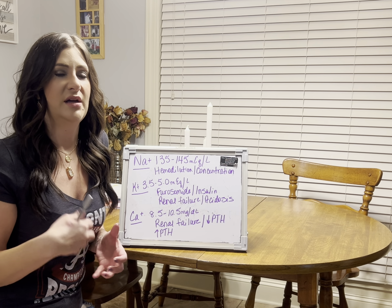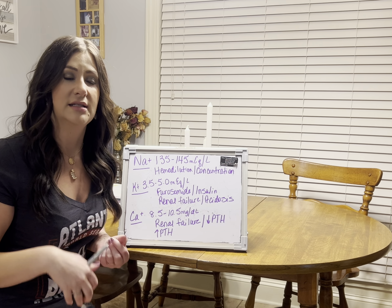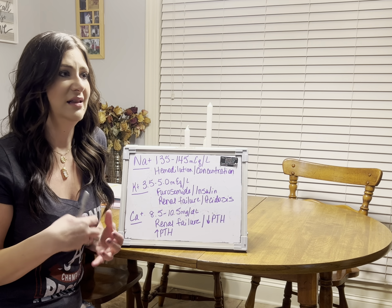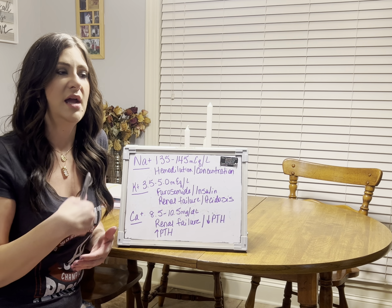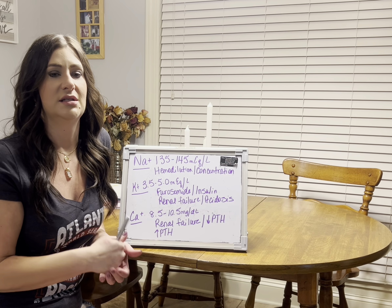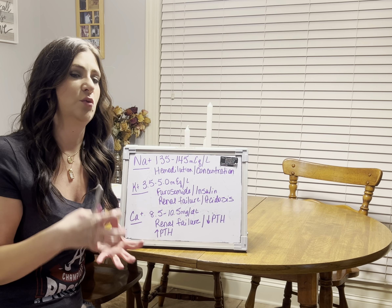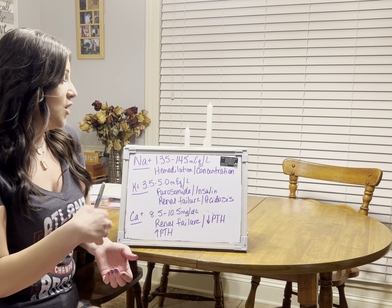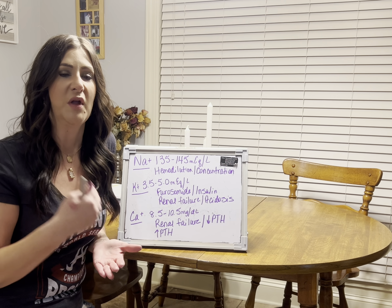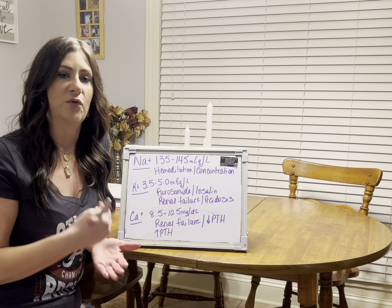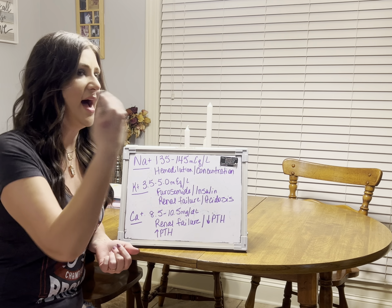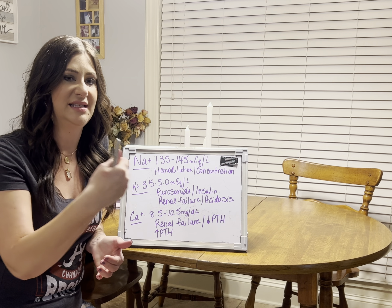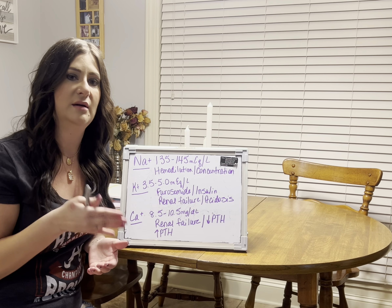To recap: with sodium, think central nervous system — headaches, muscle cramps, lethargy, mental status changes, and in severe cases increased ICP from cerebral edema leading to seizures and coma. With potassium, it's cardiac all the way — dysrhythmias, frequent PVCs, and with high potassium you'll see tall peaked T waves, wide QRS complexes, and possibly U waves. Make sure to get the patient on a cardiac monitor.